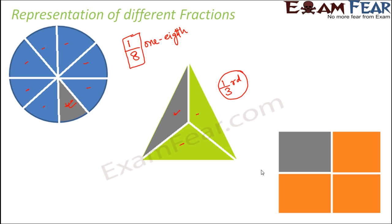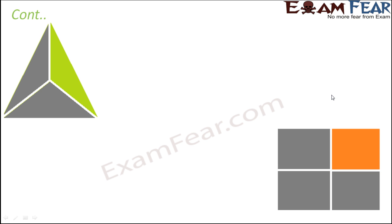Here we have a rectangle divided into four equal parts, and one part out of the four is shaded, so one fourth of the rectangle is shaded. This is how, by looking at pictures, you should be able to identify what fraction is shaded.